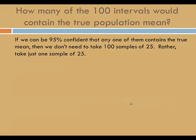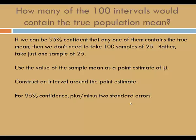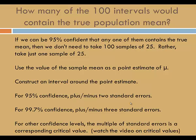If we can be 95% confident that any one interval contains the true mean, then we don't need to take 100 samples of 25. Rather, take just one sample of 25. Use the value of the sample mean as a point estimate of mu. Construct an interval around the point estimate. For 95% confidence, that's plus or minus two standard errors. For 99.7% confidence, you could use plus or minus three standard errors. For other confidence levels, the multiple of standard errors is a corresponding critical value.